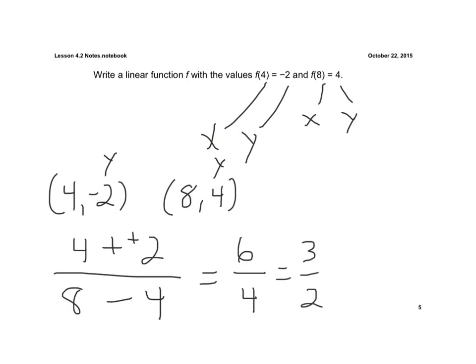Now again, I'm going to use point-slope form and I'm going to use one of my points. This is the point I'm going to choose to use. One, because they're both positive values. So I go y minus 4 equals 3 halves times x minus 8.